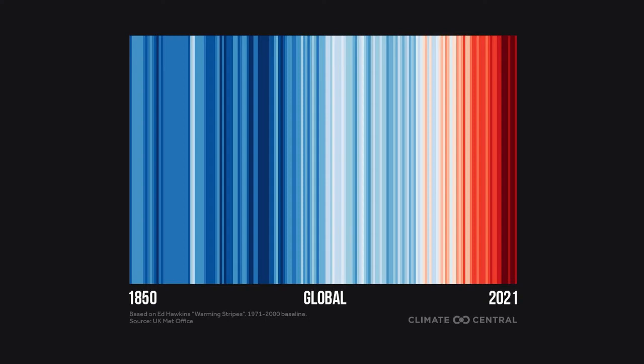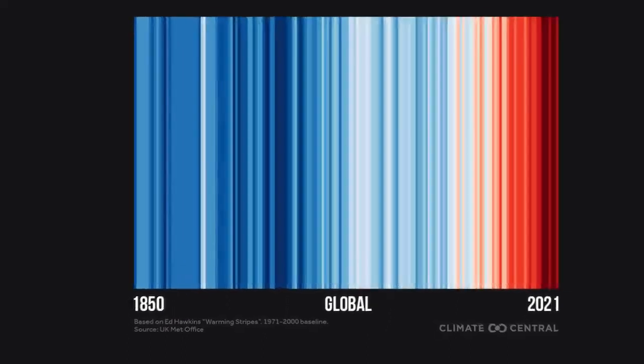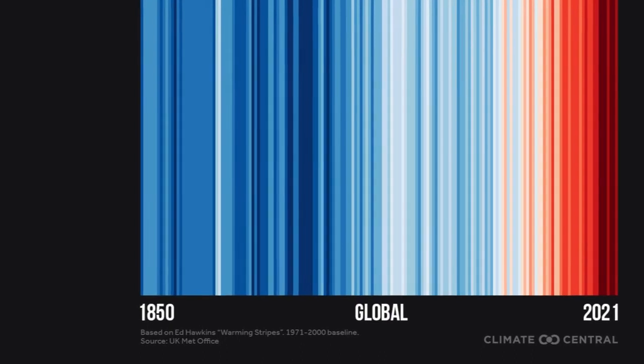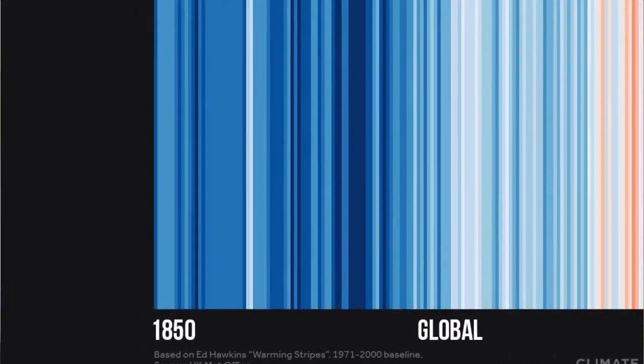They're a very simple representation of how temperatures have changed on our planet over the last 170 years. There are 170 stripes representing one stripe per year, starting in 1850 and finishing in 2021. They change color depending on the global temperature in that year — blue stripes represent cold years and red stripes represent warm years.